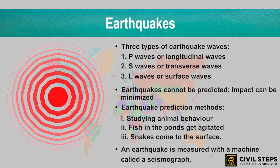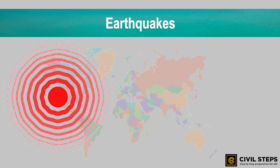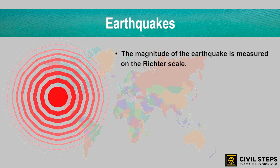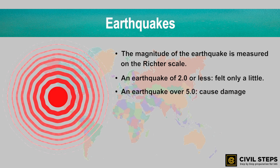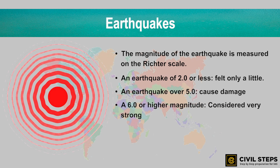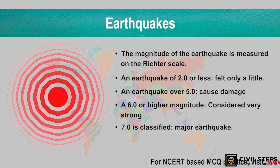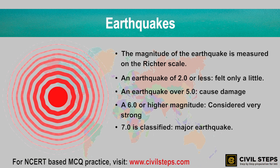An earthquake is measured with a machine called a seismograph, and the magnitude of the earthquake is measured on the Richter scale. An earthquake of 2 or less can be felt only a little. However, an earthquake over 5 can cause damage from things falling. A magnitude of 6 or higher is considered very strong, and a magnitude of 7 is classified as a major earthquake.